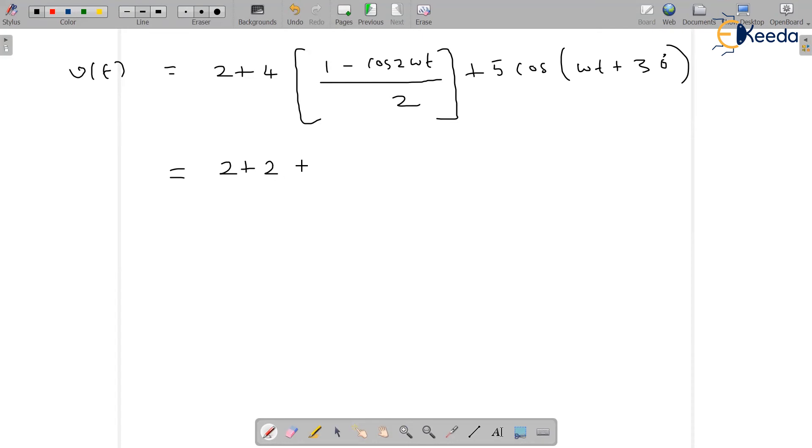Which gives us 4 minus 2cos2ωt plus 5cos(ωt + 30°).